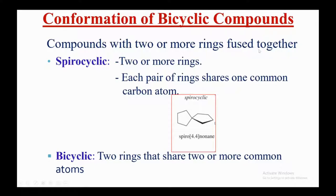Spirocyclic compounds have two or more rings where each pair of rings shares one common carbon — the spirocarbon. For example, this compound is named spiro[4.4]nonane: four carbons on the right-hand side and four on the left-hand side, giving 4.4, and there are nine total carbons total, hence 'nonane.'